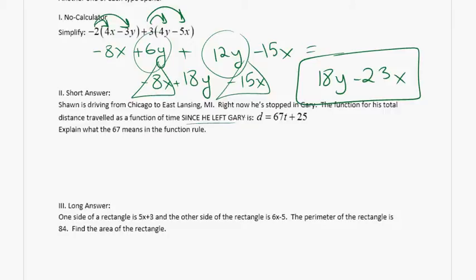All right, short answer. Sean is driving from Chicago to East Lansing, Michigan. Right now, he's stopped in Gary. The function for his total distance traveled as a function of time since he left is d equals 67t plus 25. Explain what 67 means in the function rule. Sedan? Say that again? Okay, the distance in a certain amount of time. So, a rate. So, 67 is the rate. Or, we can just call it the speed.